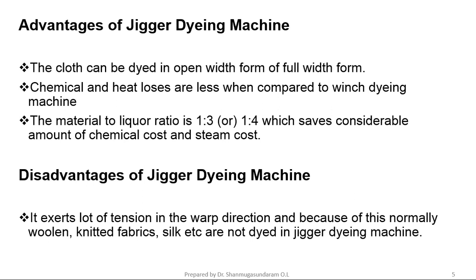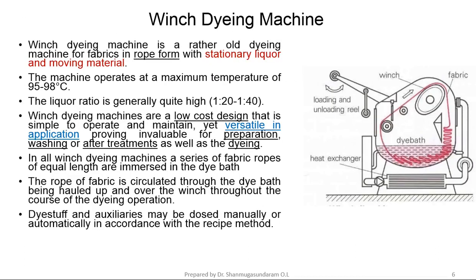Disadvantages of Jigger Dyeing Machine: it exerts a lot of tension in the warp direction and because of this, normally woollen, knitted, and silk fabrics are not dyed in a Jigger Dyeing Machine. Now let us see the Winch Dyeing Machine.